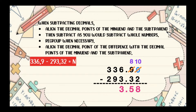3 minus 9 cannot be since 3 is smaller than 9. So we're going to borrow 1 from 3 at the 100's place. 3 will become 2, while the 3 at the 10's place will become 13. 13 minus 9 is equal to 4. And then 2 minus 2, that is equal to 0. So the final answer is 43.58.